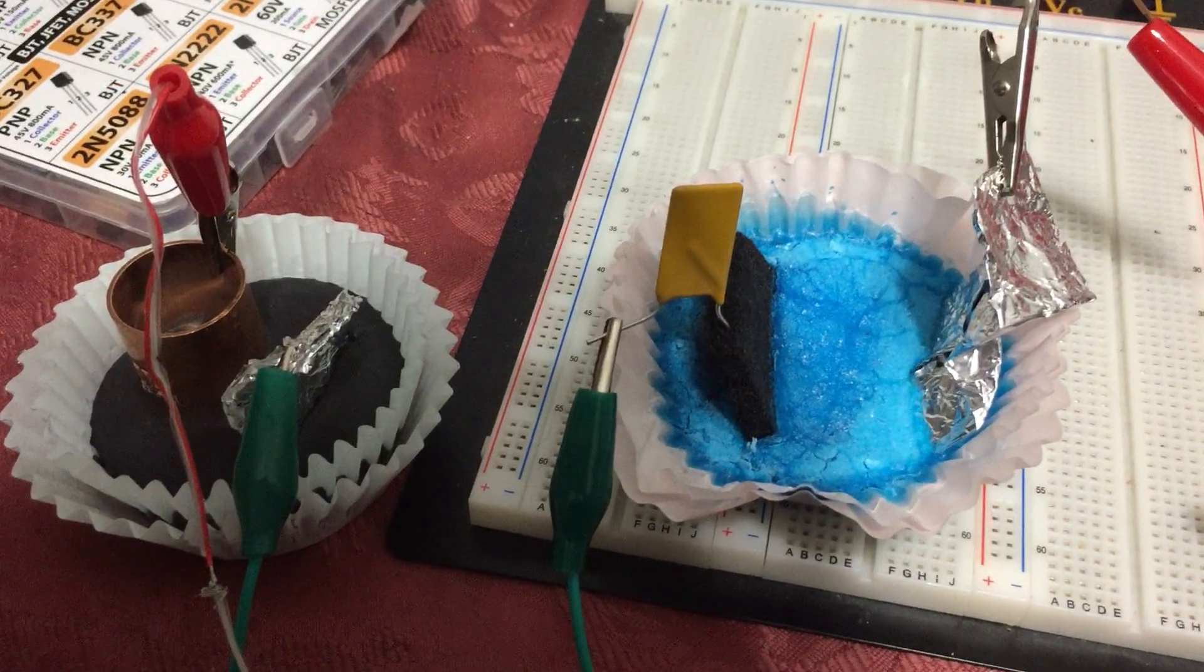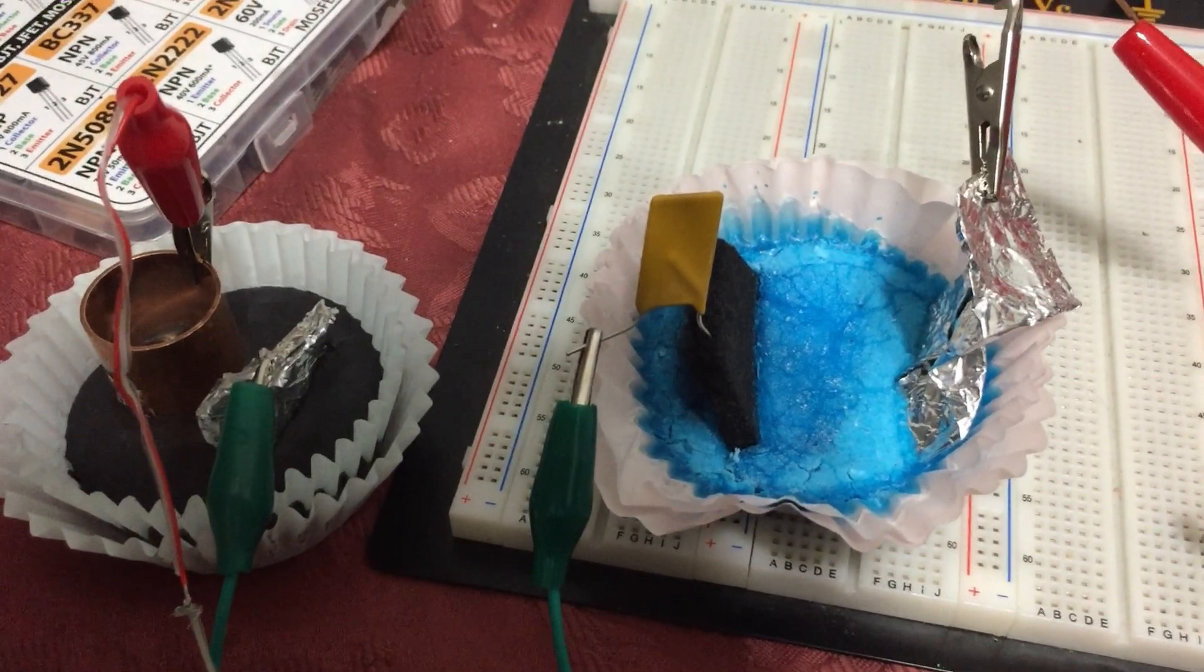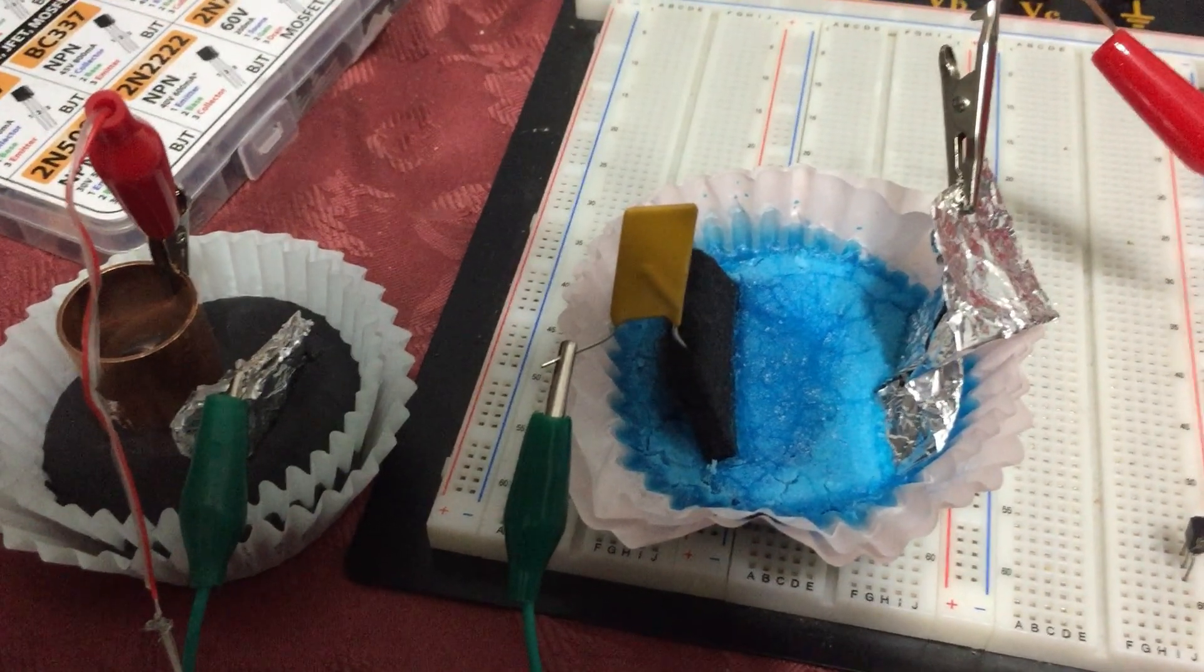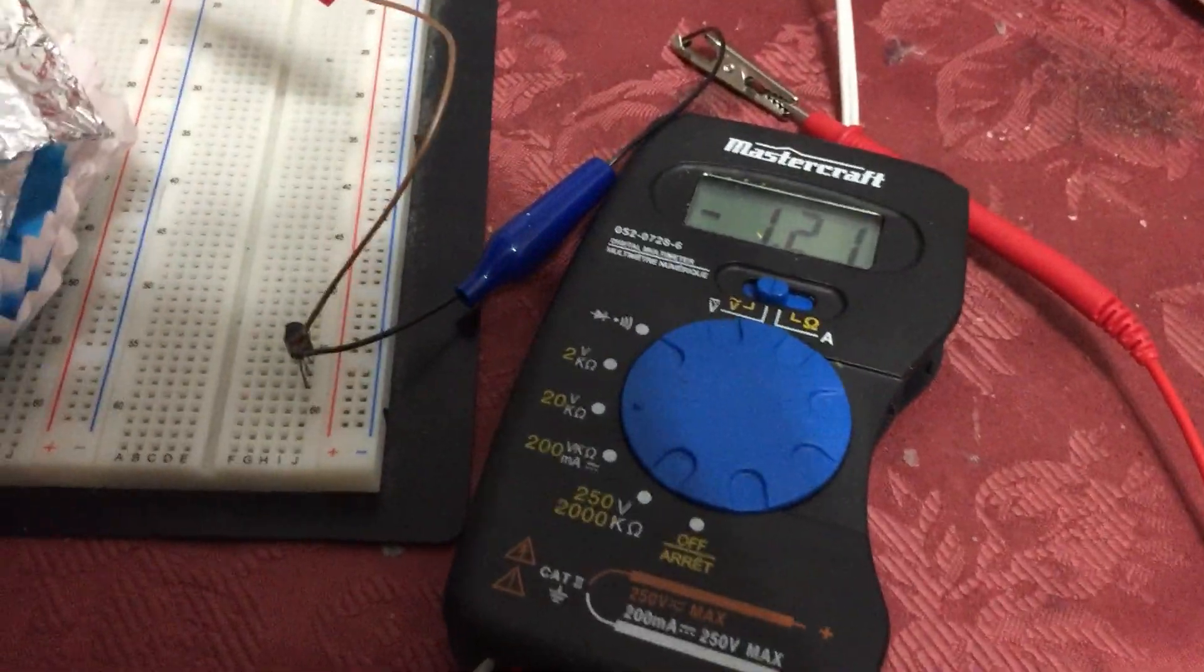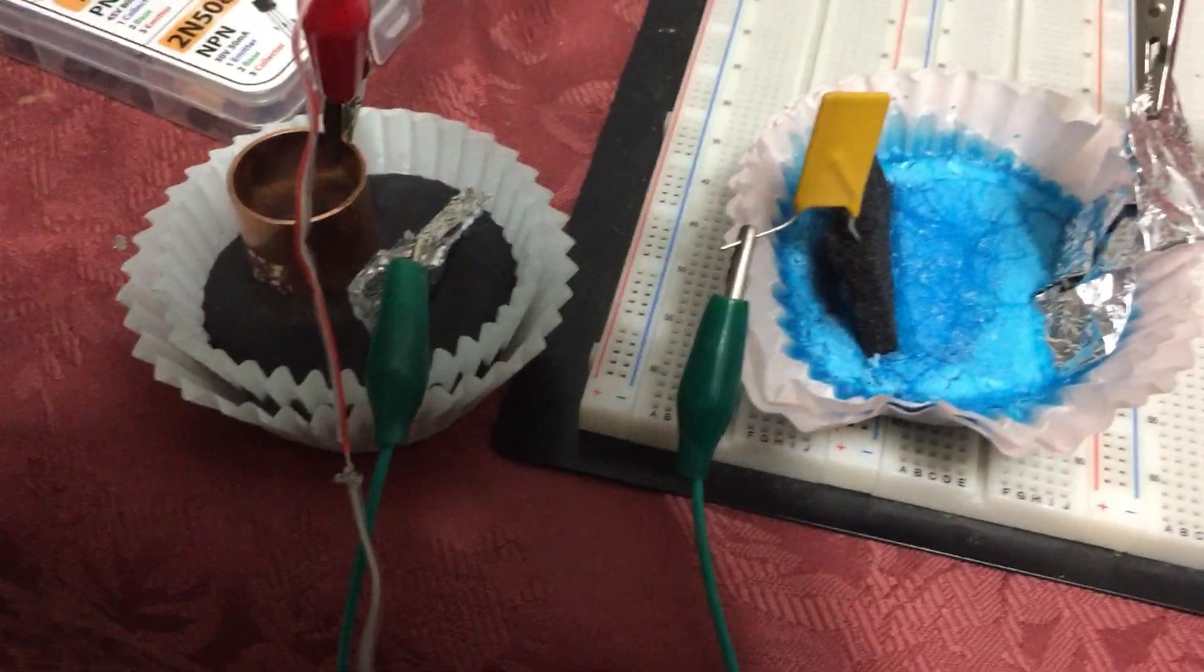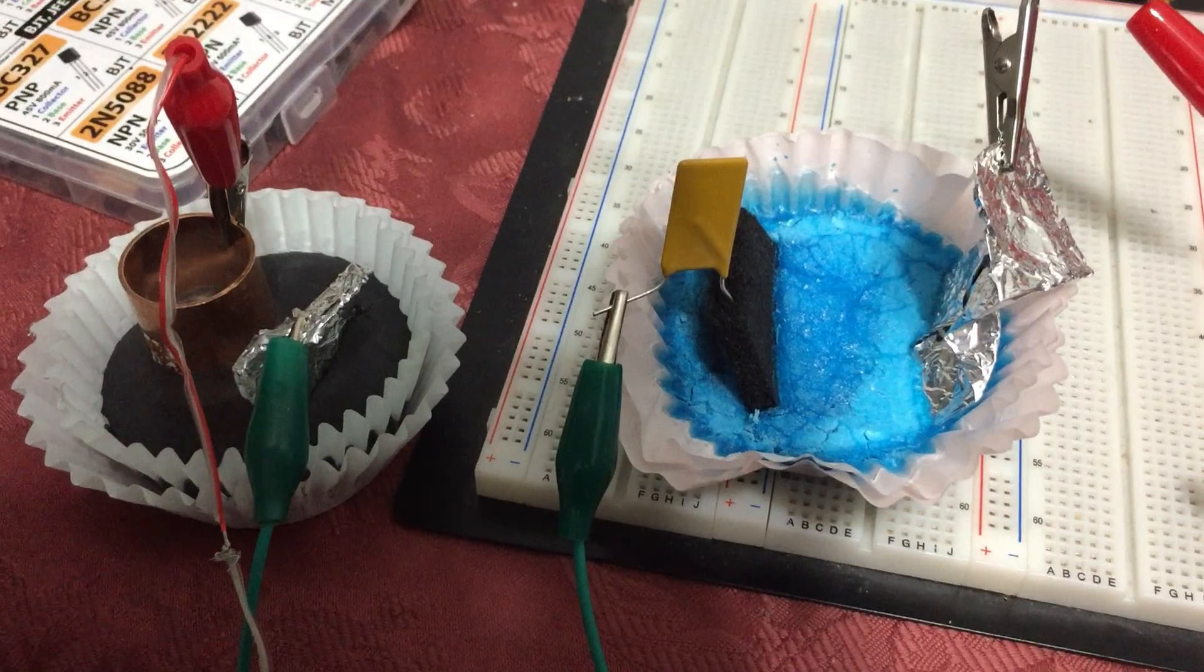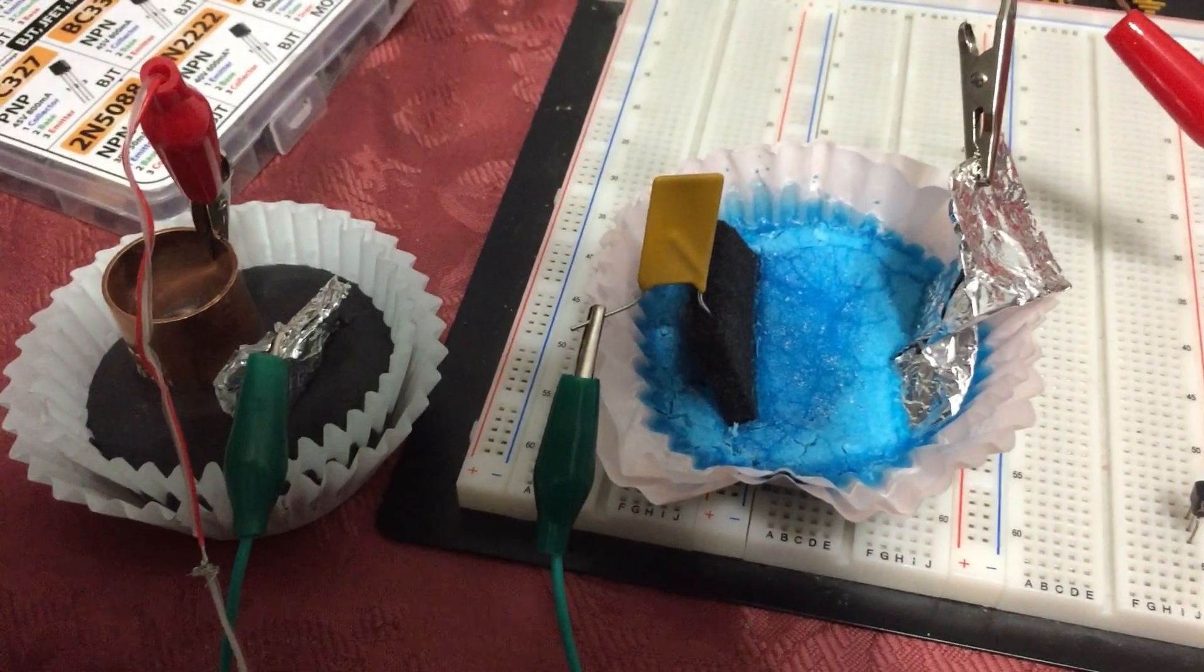Again, if this was truly a pure DC system, the capacitor would, after like one second or so, just block. There'd be no more—this would go to zero, because that's what it is: it's a DC blocking, but it still allows AC.